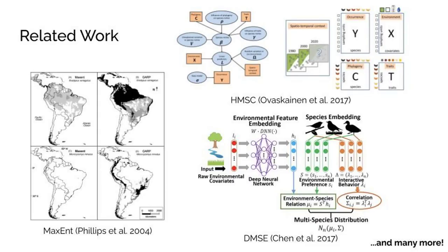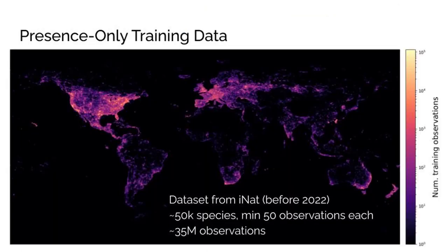Many algorithms have been proposed for modeling species ranges. However, most existing approaches are unable to take advantage of large training sets or jointly model many species. To provide a sense of scale, the training data for this paper consists of 35 million observations covering around 50,000 species.